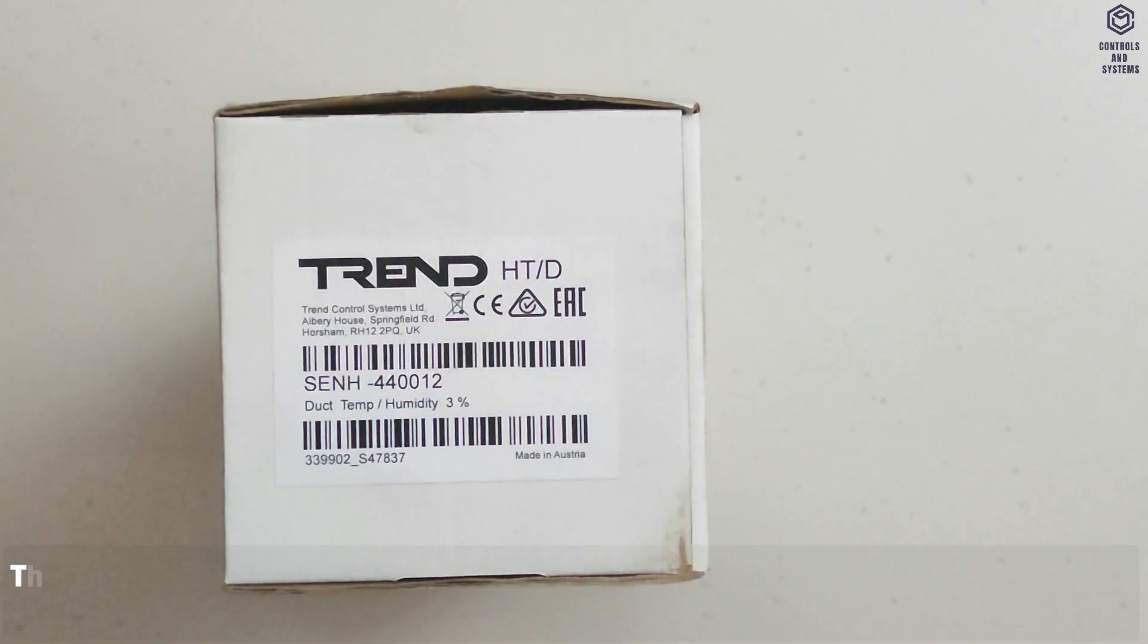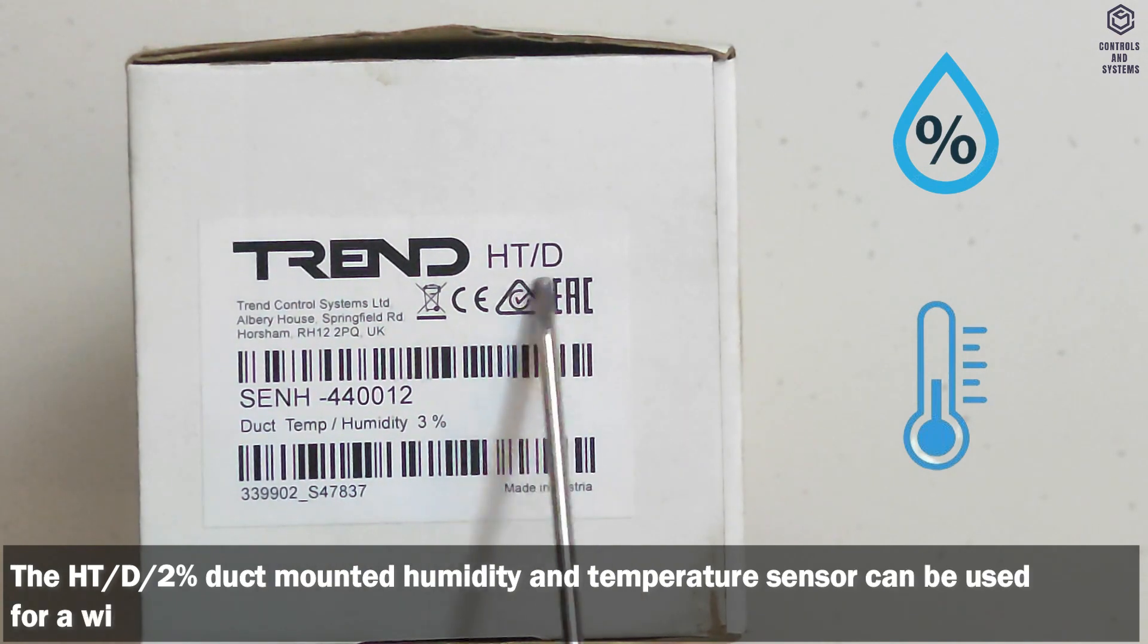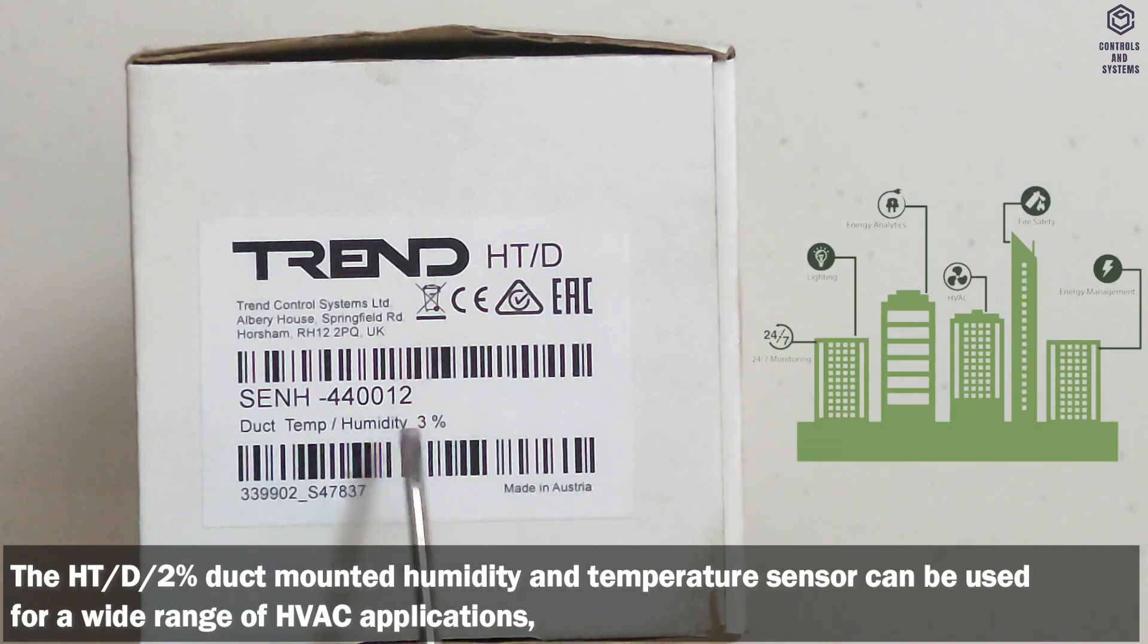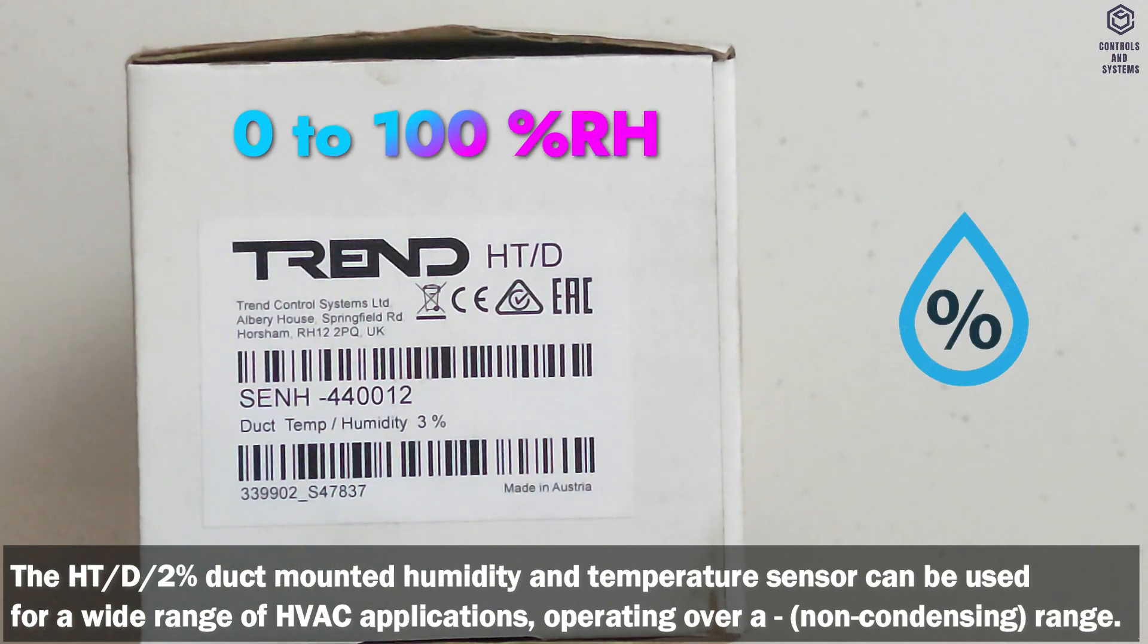Device Overview. The HTD Humidity and Temperature Sensors can be used for a wide range of HVAC applications, operating over 0 to 100% RH range.